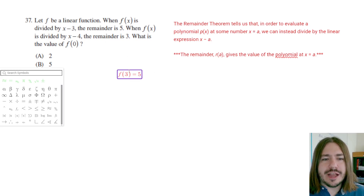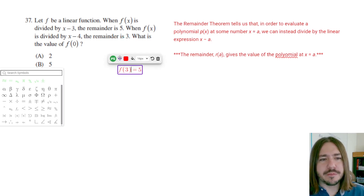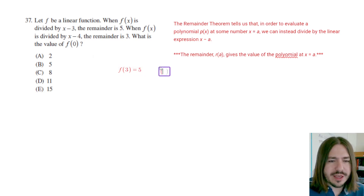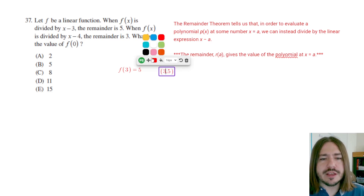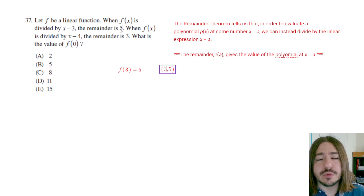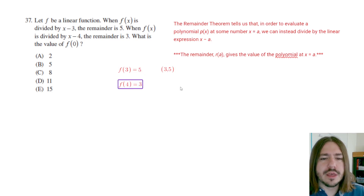That's not super obvious, but that is a consequence of the remainder theorem. So if we divide this unknown polynomial function by x minus 3 and the remainder is 5, that's telling us that we have a coordinate at 3 comma 5. The 3 is coming from the expression x minus 3 — if you set that equal to 0 and solve it, you'll get the x value. The y coordinate associated with it equals the remainder when you divide by that binomial. It also says that when f of x is divided by x minus 4, the remainder is 3, so that tells us f of 4 equals 3. We've got a coordinate at 4 comma 3.